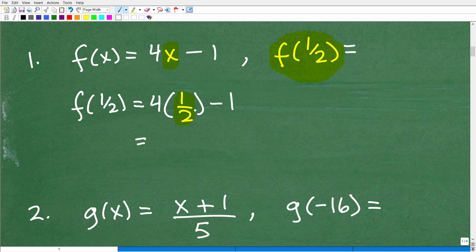Now I'm going to go ahead and simplify. I'm going to do multiplication first. So 4 times 1 half is, of course, 2. So 2 minus 1 is, of course, going to be 1. So f of 1 half is equal to 1.